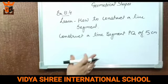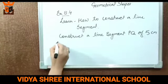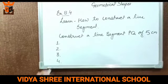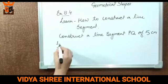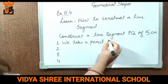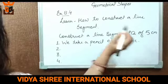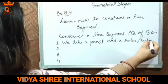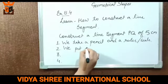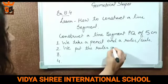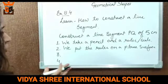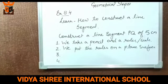To construct this line segment, we do the following things. First, we use a ruler. Then we place the ruler — the scale — on a plain surface, whether it is your notebook, whiteboard, blackboard, or any other sheet to draw the line segment.